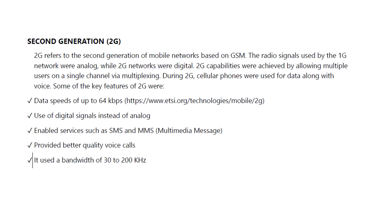In the first generation, the networks were analog, while in the case of 2G networks, the entire network was digital. The 2G capabilities were achieved by allowing multiple users on a single channel via multiplexing. During 2G, cellular phones were used for data along with voice.